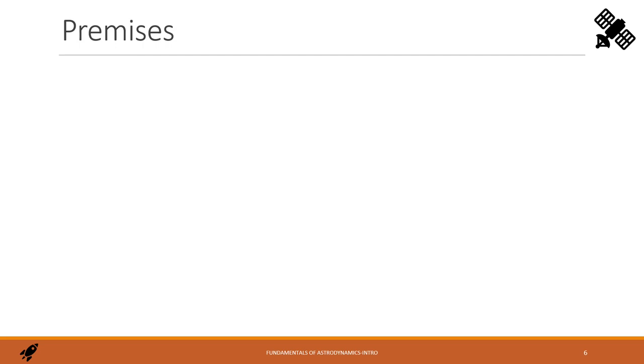Orbits are Keplerian type, that is perfect conics. The motion is only two dimensional. However, plane change is adopted time by time. The mathematical model is the two-body restricted problem. Only two bodies interact at once and the second one has a negligible mass compared to the first one.